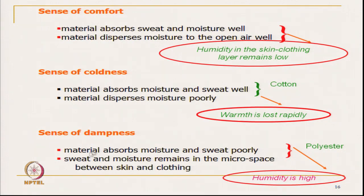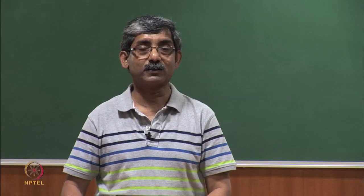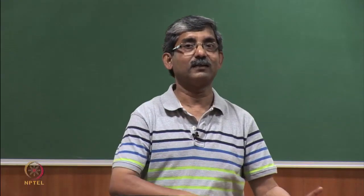Another fabric — a material that absorbs moisture and sweat poorly — that is a hydrophobic fibre, for example normal polyester. It does not absorb moisture due to its hydrophobic nature, and sweat moisture remains in the micro pores. It does not absorb, and moisture remains in the microspace between skin and clothing — the microclimate. Then you will feel a sense of dampness. As it is damp, the humidity is high irrespective of whether it is cold or hot climate, and we will feel uncomfortable. Why normal polyester? Because if we can design a polyester fibre with a different shape, the things will be totally different.